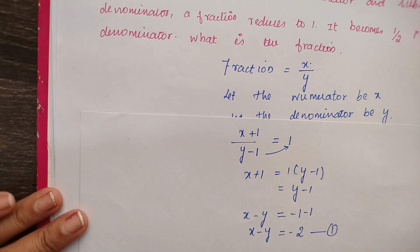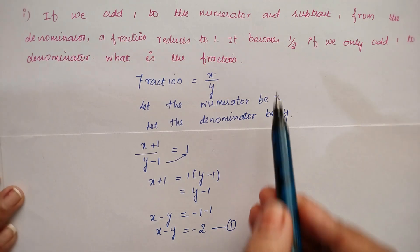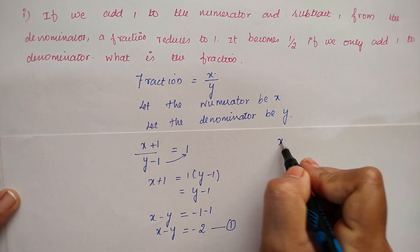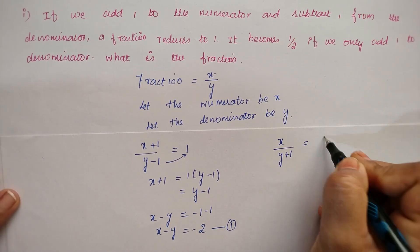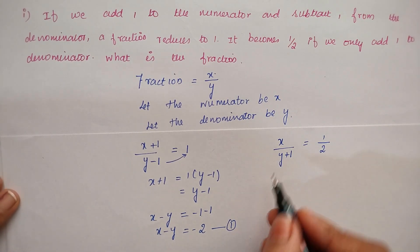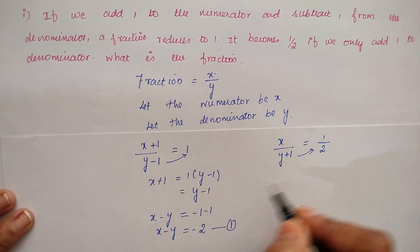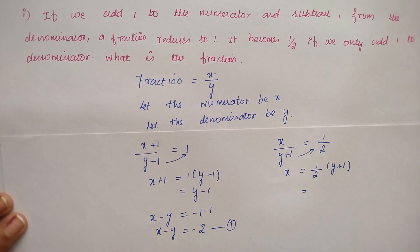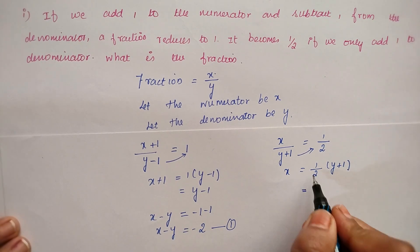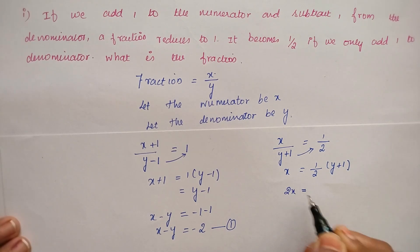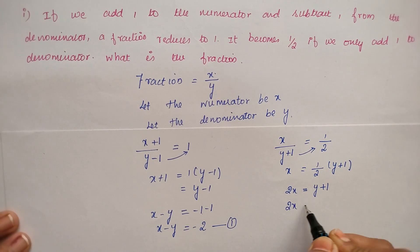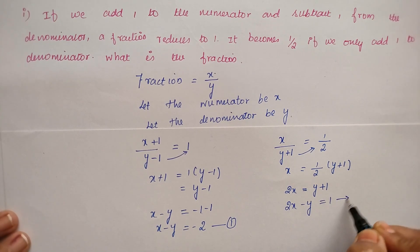Next is the second statement to form equation 2. It becomes 1 by 2 if we only add 1 to the denominator. So, x divided by (y plus 1) equal to 1 by 2. Cross multiplying: 2x equal to y plus 1, so 2x minus y equal to 1. This is equation number 2.